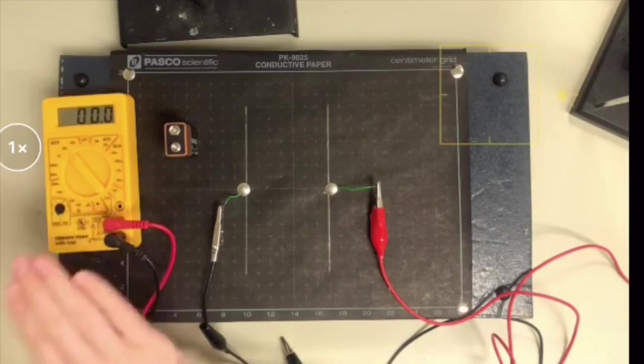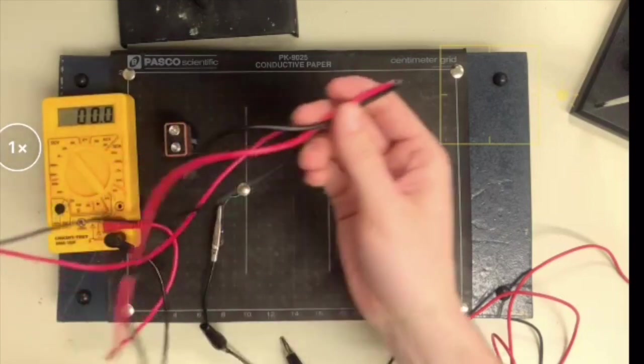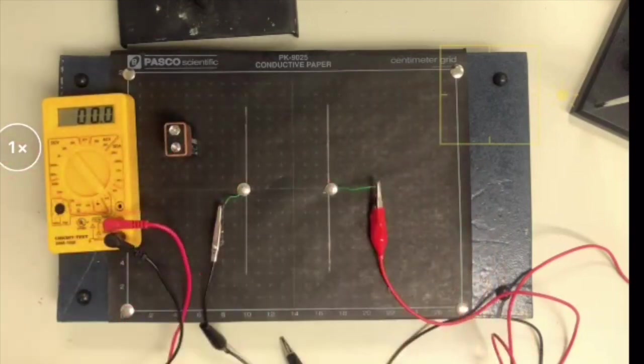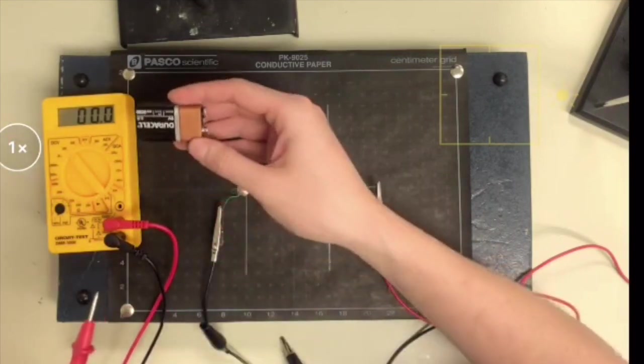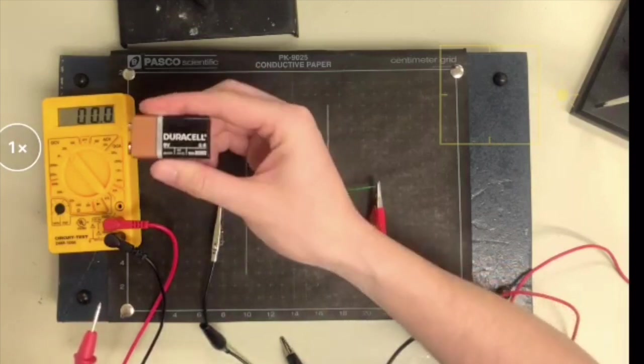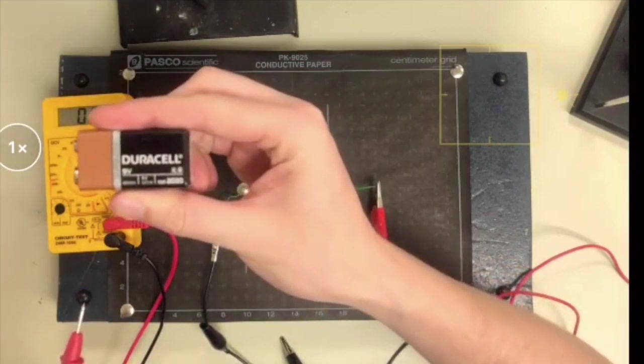First thing we have here is our multimeter, which has two probes attached to it, a red and a black. This should all be hooked up when you get there, but I'm showing you it so you have a bit of background knowledge. We also have here our power source and this lab is just going to be a straight up nine volt battery.